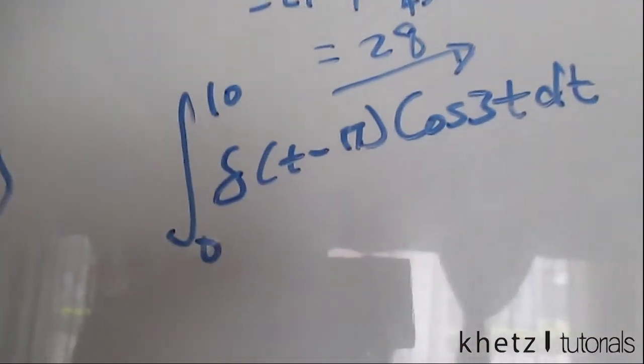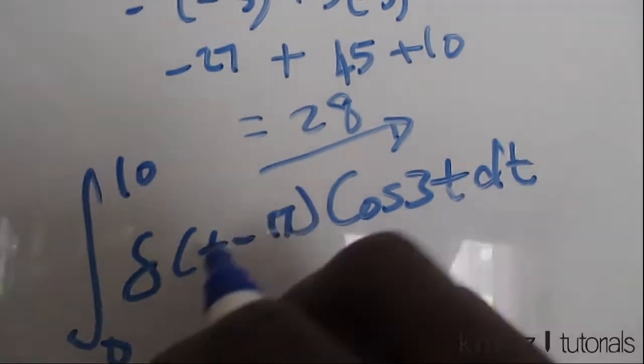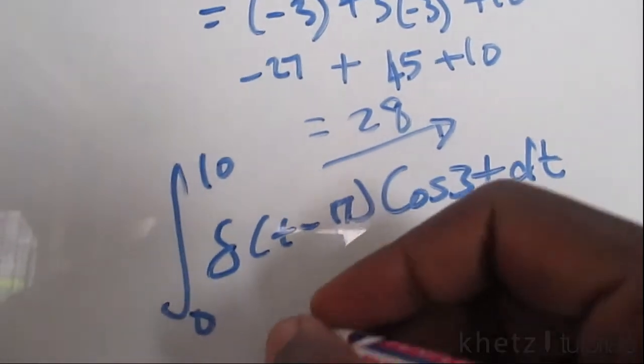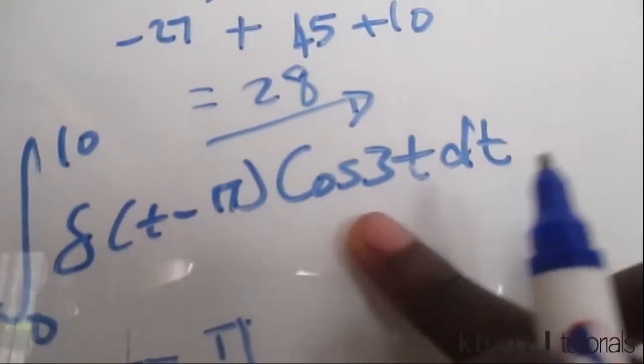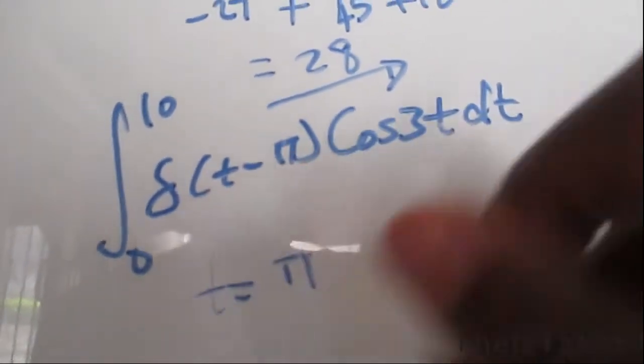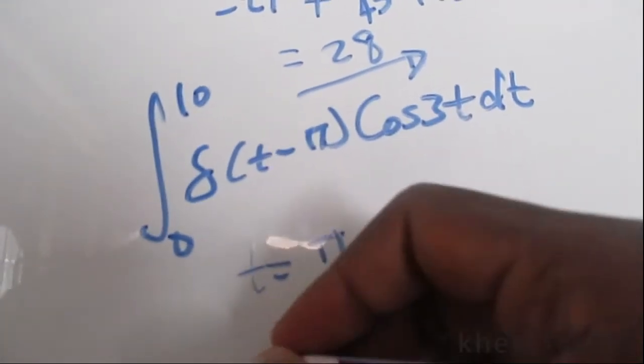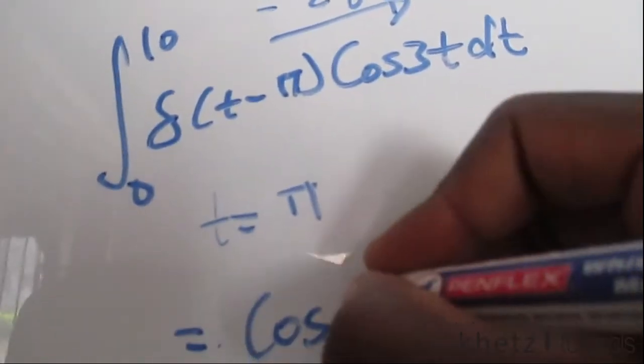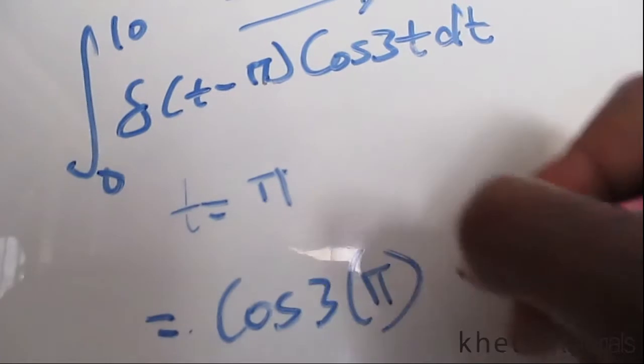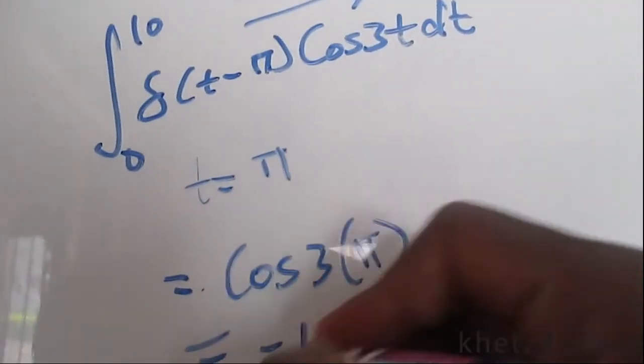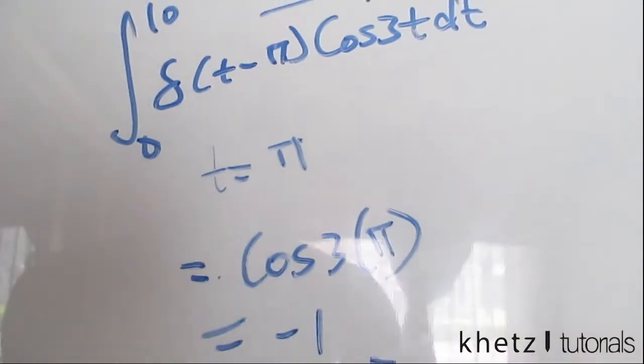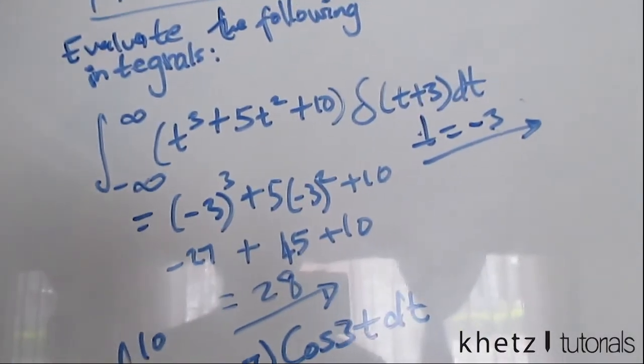Now I'm going to move on to the second question. We basically do the same thing. We look at where the impulse actually occurs, and the impulse occurs at t equals pi. Therefore we just substitute pi into the function which is multiplied by the impulse. The answer is going to be cosine of 3π, which is negative 1. These are the two answers for this particular problem.